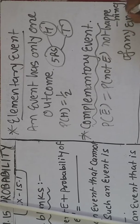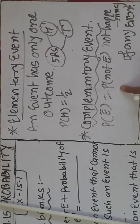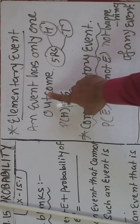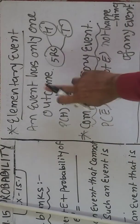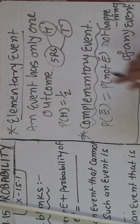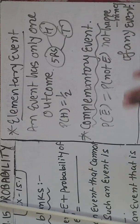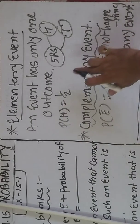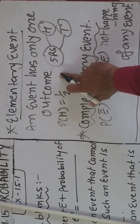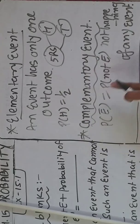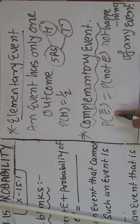Event na aane ki probability usko bolenge complementary event, aur event hone ki probability ko bolenge elementary event. Toh jo certain event tha — last time jo video mein maine bataya tha — certain event that is 1, toh it is elementary event. Aur jo uncertain event tha, that is complementary event.